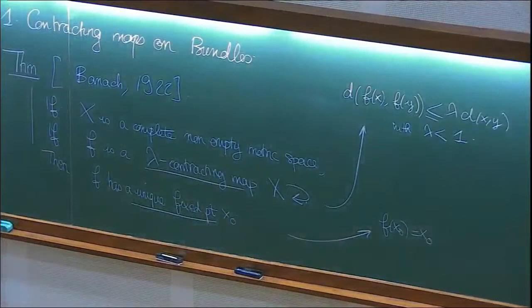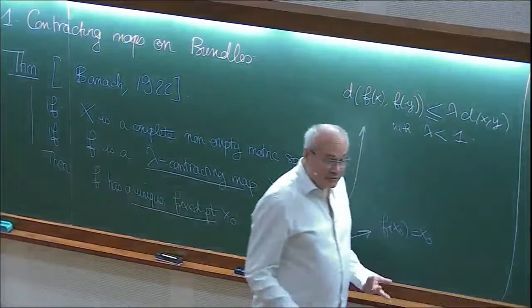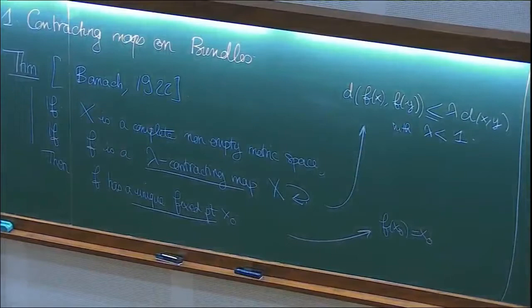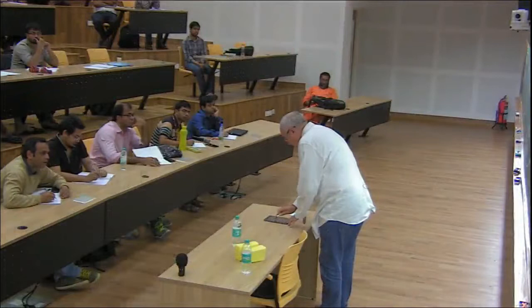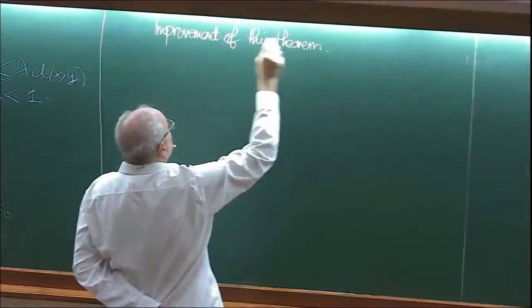I'm not going to give the proof of that. This is a theorem you learned at undergrad. You know how important it is in order to prove existence of, say, the implicit function theorem and all that kind of stuff. In many ways, it's one of the rare constructive ways of building things in mathematics via a fixed point theorem.